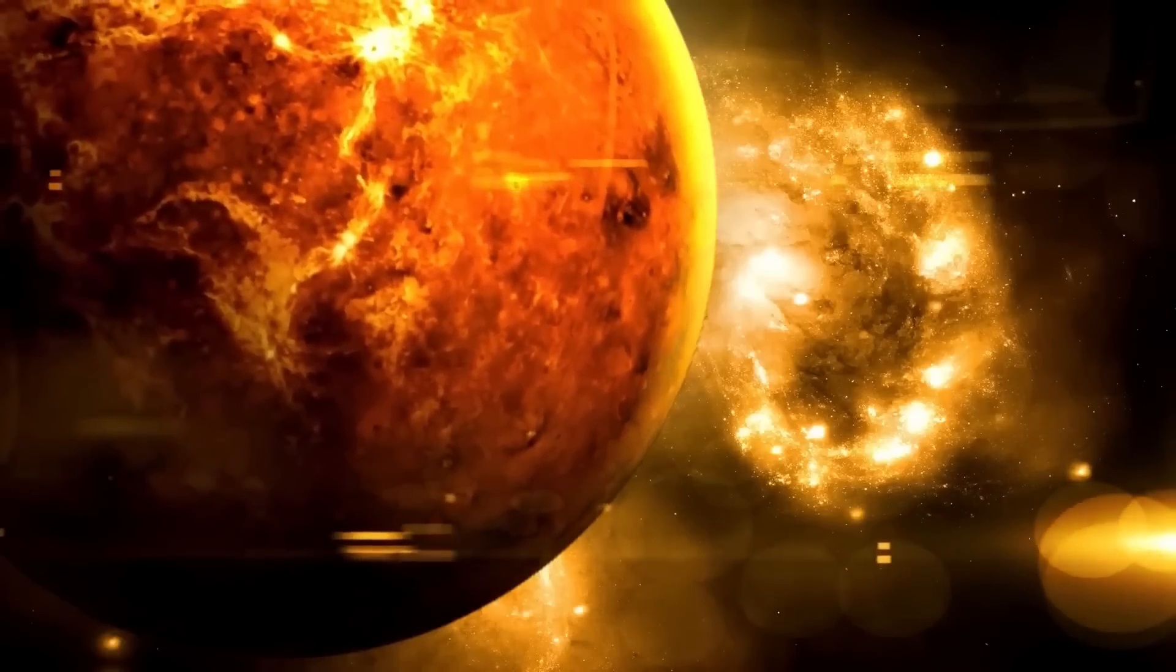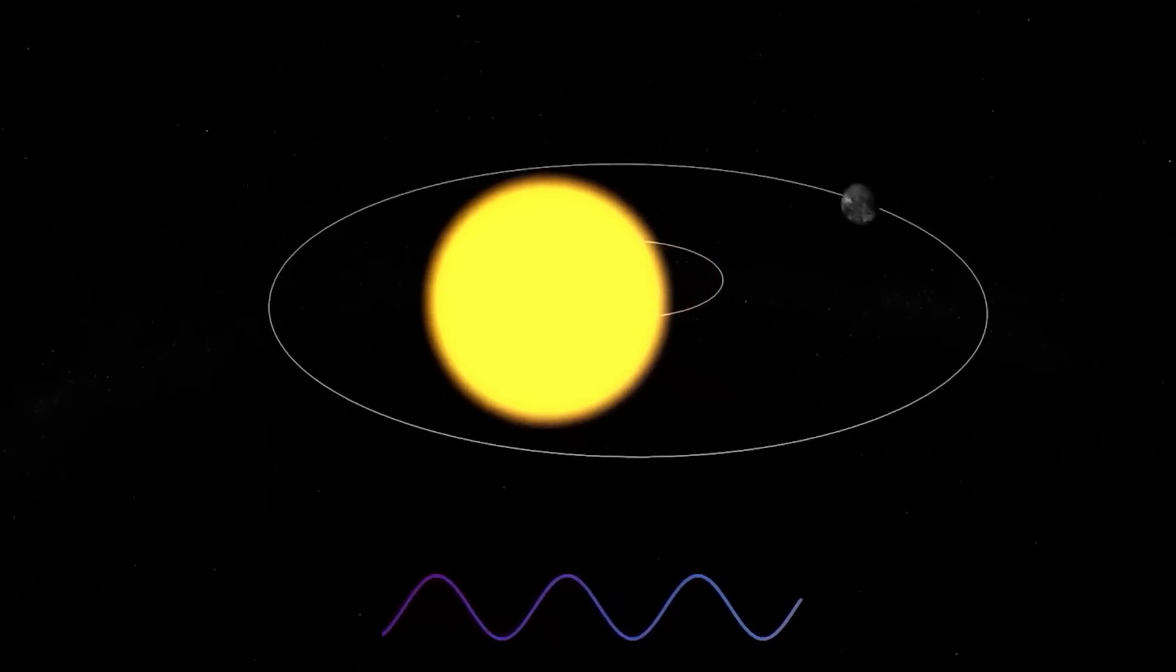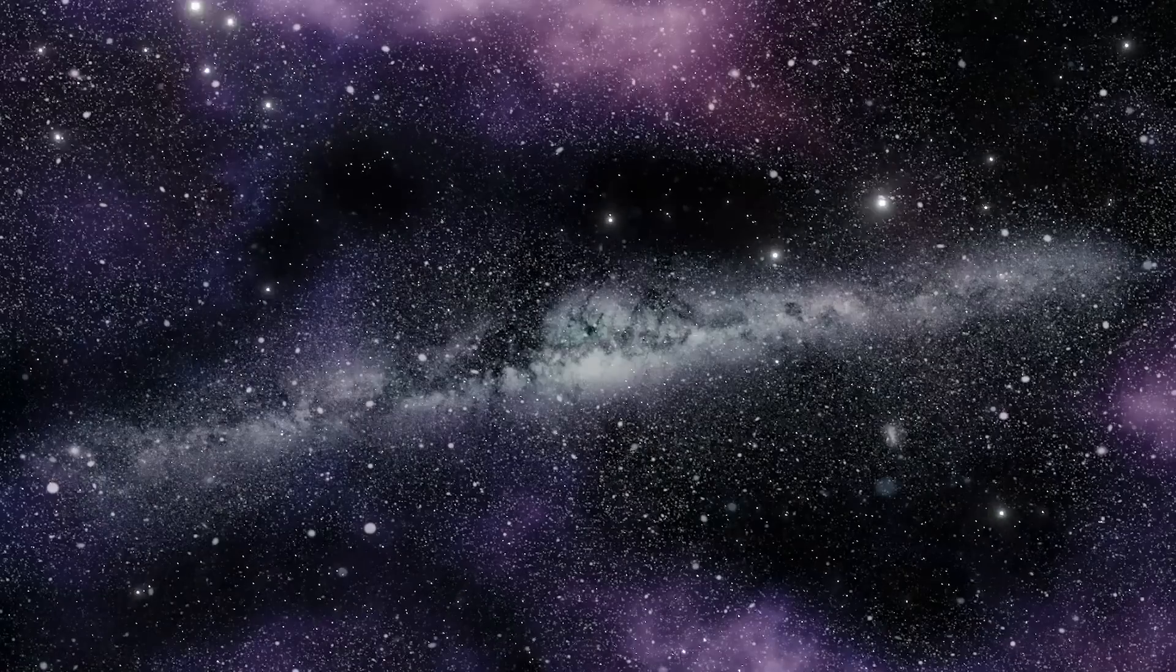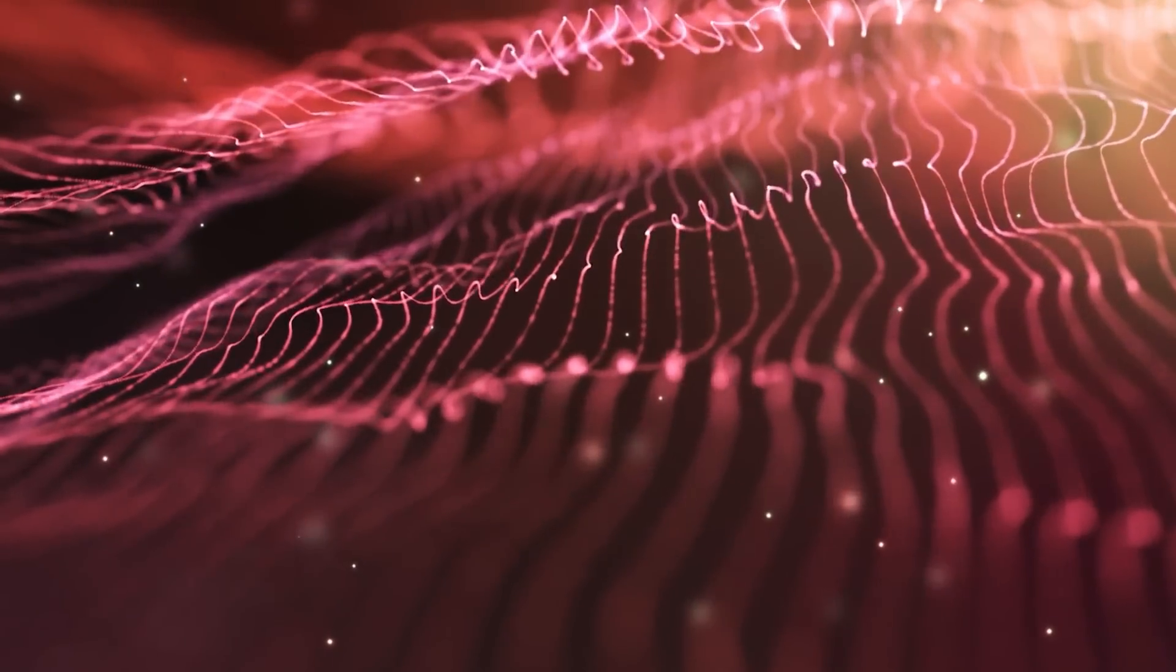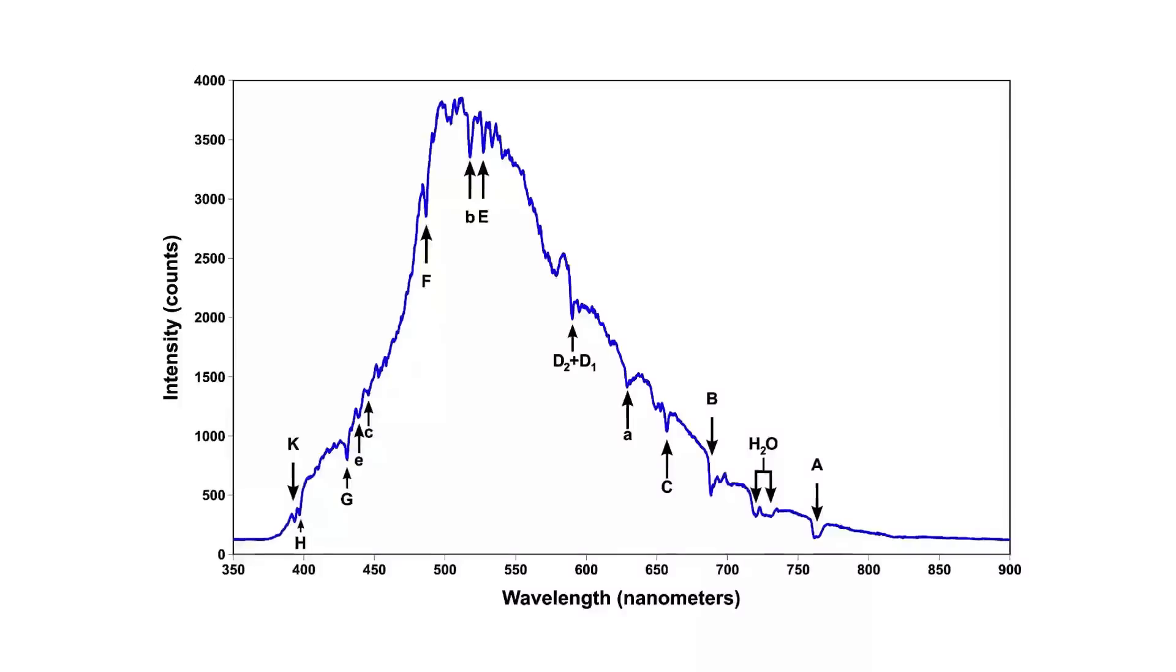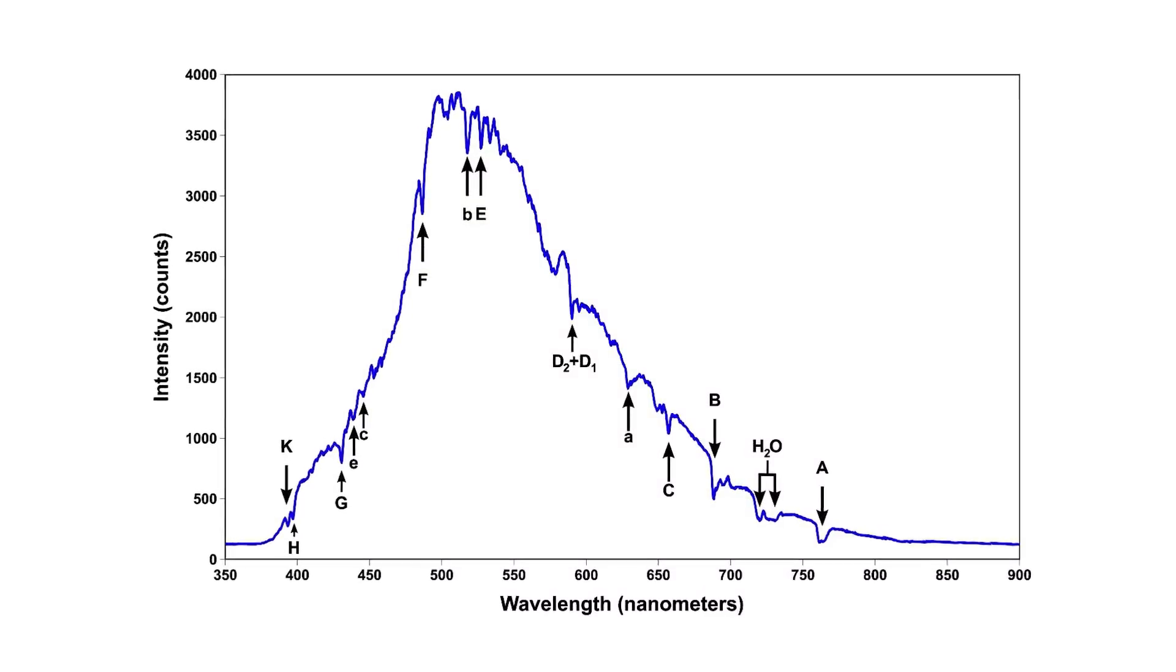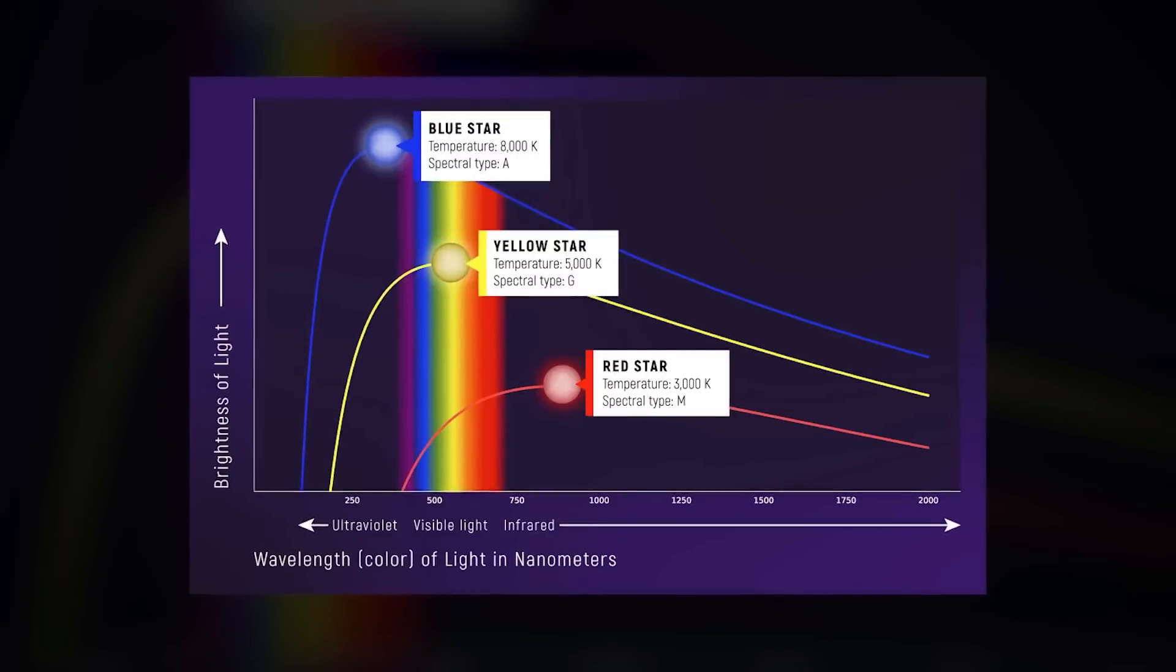The close orbit of Proxima b around its star also results in a phenomenon called tidal locking. This means that one side of the planet always faces the star, receiving continuous sunlight, while the other side remains in constant darkness. This unique situation creates a stark contrast between the two hemispheres. One could be basking in perpetual daylight, while the other could be frozen in an eternal night.